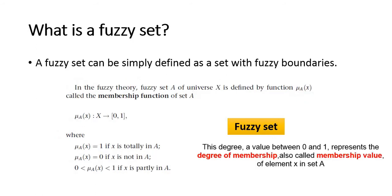In fuzzy theory, a fuzzy set A of universe X is defined by the function μ_A called membership function of set A. If 1, x is totally in A. If 0, x is not in A. However, between 0 and 1, it is partially in A.